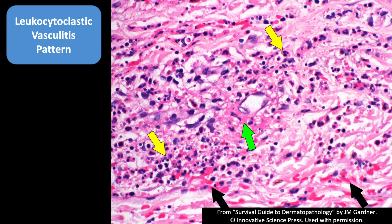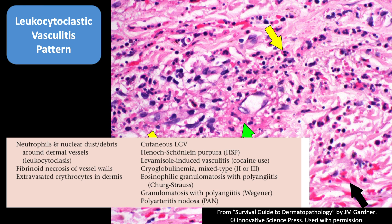Ideally you'd see all three of those features, although sometimes we only get two or one of them. In those cases I may say I'm suspicious for vasculitis but can't definitively see fibrinoid necrosis. It's important to keep vasculitis in mind because although some forms are limited to the skin and relatively indolent, there are other forms that are systemic and can be really problematic and even life-threatening for patients.